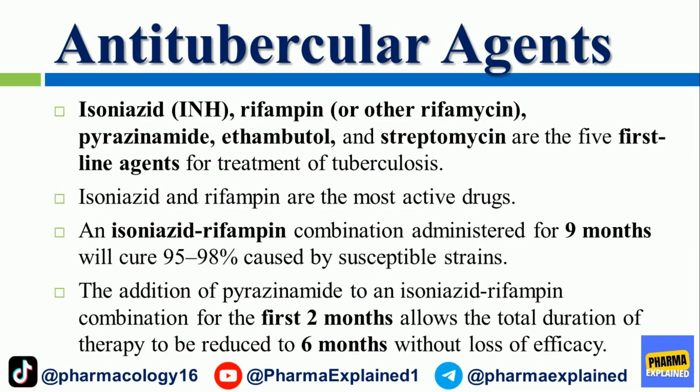Antitubercular agents: Isoniazid (INH), rifampin or other rifamycins, pyrazinamide, ethambutol, and streptomycin are the five first-line agents for treatment of tuberculosis. Isoniazid and rifampin are the most active drugs. An isoniazid-rifampin combination administered for nine months will cure 95% to 98% of cases caused by susceptible strains. The addition of pyrazinamide to an isoniazid-rifampin combination for the first two months allows the total duration of therapy to be reduced to six months without loss of efficacy.